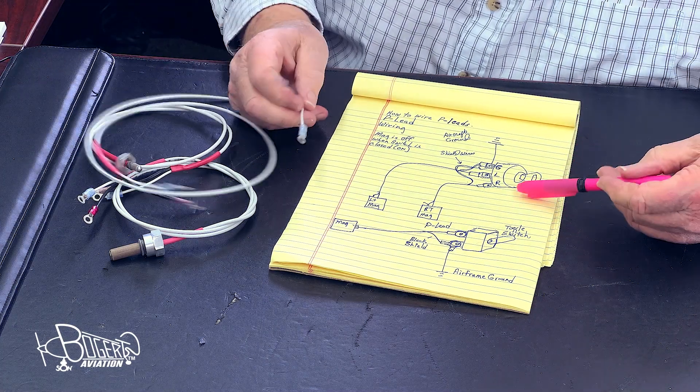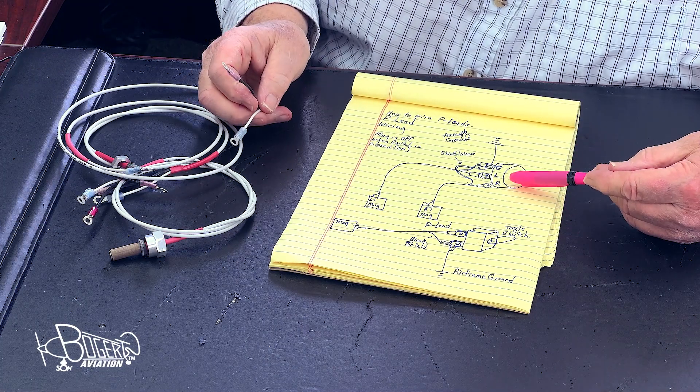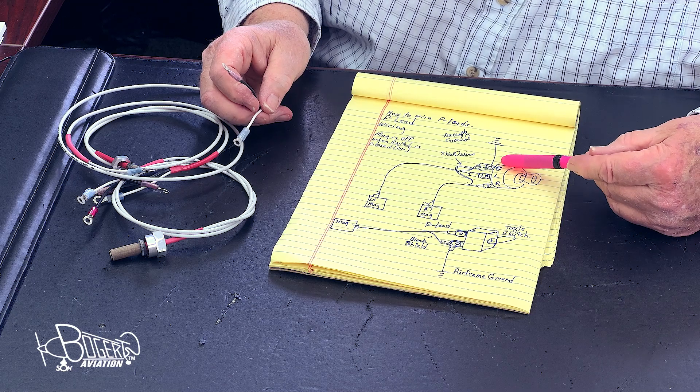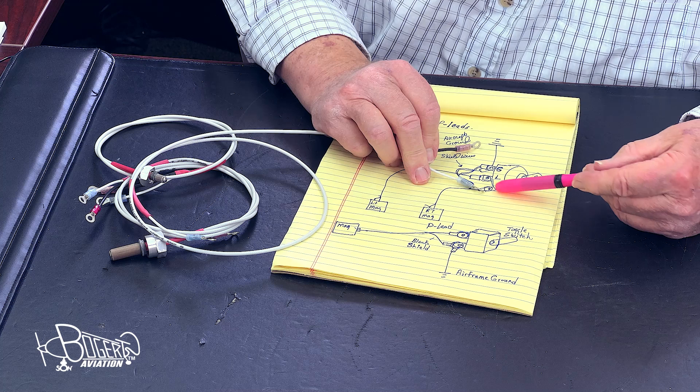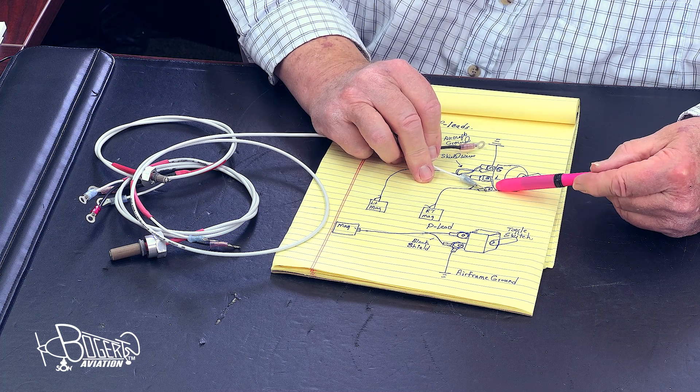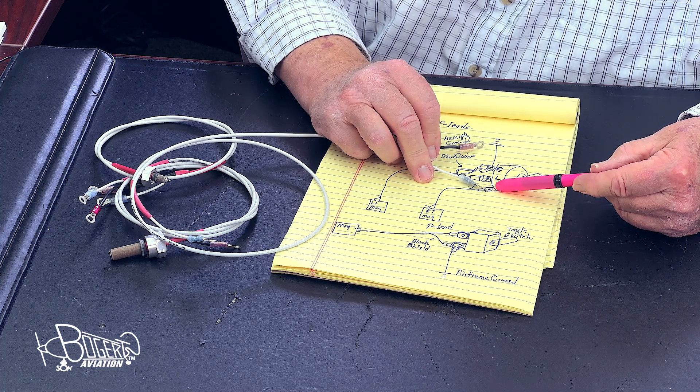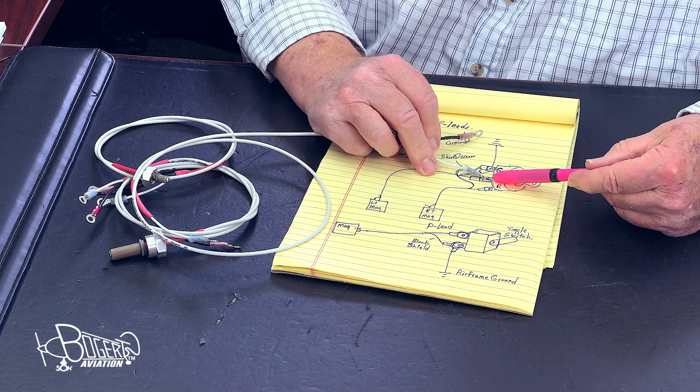On a rotary switch, it's pretty simple. You've got a right, a left, and a ground. The same thing goes here. The white lead is going to connect to, in this case, the right magneto, or it'll connect to the left magneto.